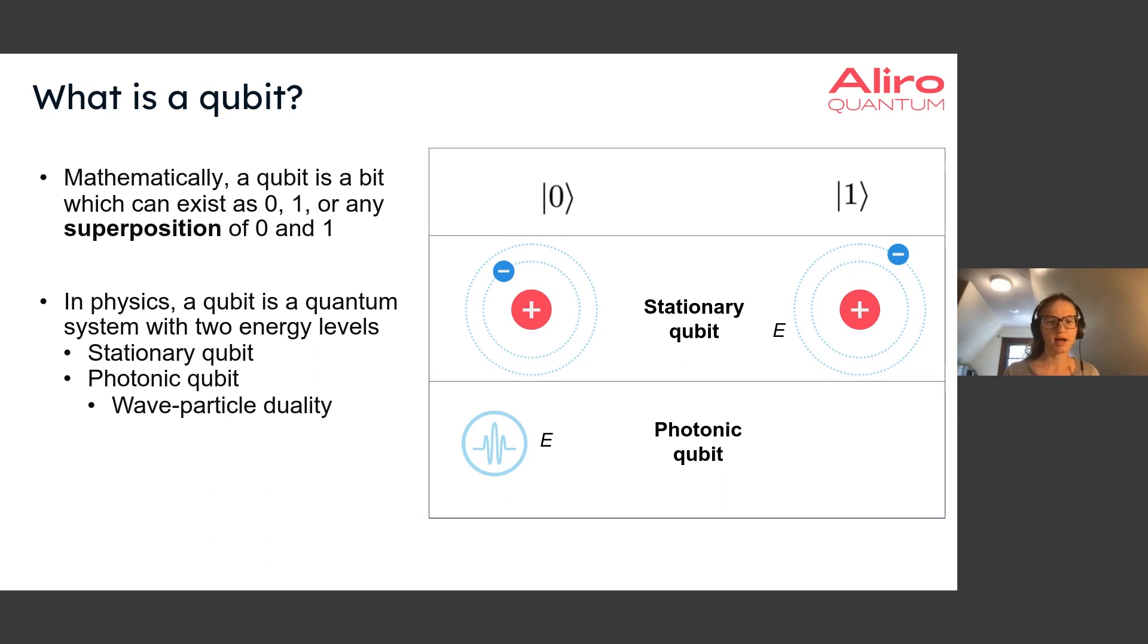Physically, a stationary qubit can be thought of as a system with two energy levels. One of the most basic systems people use is an atom. In this slide, we have a simplified picture of an atom consisting of a positively charged nucleus and a negatively charged electron. We know that opposites attract, so the positive charge wants to be close to the negative charge, and it requires energy to pull the negative charge away from the positive charge.